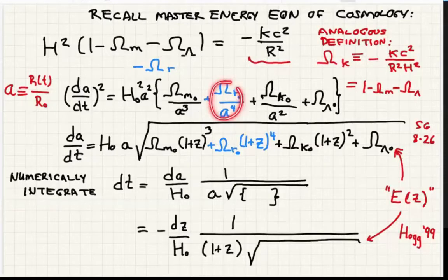They each scale in a different way. Radiation, because of the redshift factor, scales as A to the fourth. This one happens to scale as A squared. A is getting bigger with time. It started out at zero. It's gotten up to one today. In the future, it's going to get bigger and bigger.